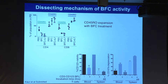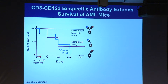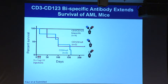Since by day 17 leukemia stem cells were already rising again with the bispecific conjugate, we tested whether the full-length antibody is more potent. We compared the full-length bispecific antibody, anti-CD123 alone, or anti-CD3 alone. Although the number of mice was relatively small, all mice treated with the full-length bispecific antibody survived, while the half-molecule versions did not work well. The full-length bispecific antibody appears much more effective.